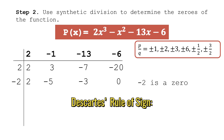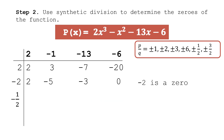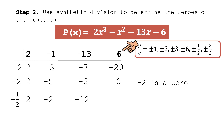According to Descartes' Rule of Signs, we need two negative zeros and one positive zero. Testing negative 1/2: bring down 2; 2×(−1/2)=−1, −1+(−1)=−2; −2×(−1/2)=1, 1+(−13)=−12; −12×(−1/2)=6, 6+(−6)=0. The remainder is 0, therefore negative 1/2 is a zero of the function.